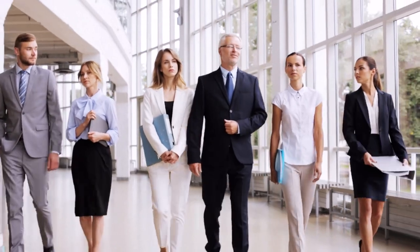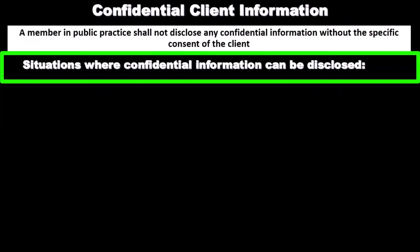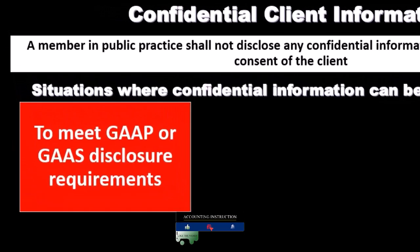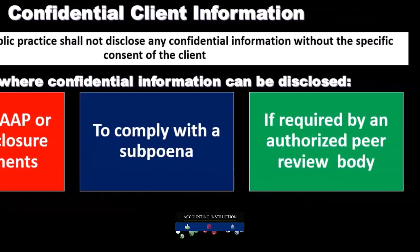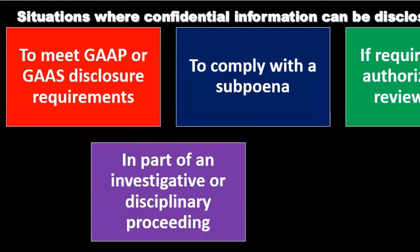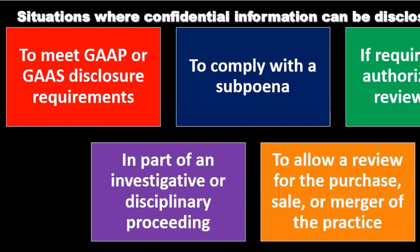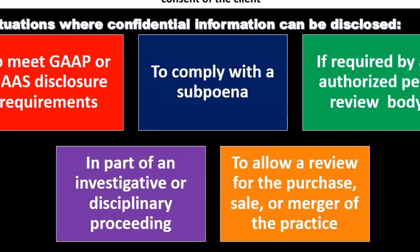However, there are some exceptions to the rule — situations where confidential information can be disclosed. In other words, to meet GAAP or GAAS disclosure requirements; to comply with a subpoena, if there's a legitimate subpoena; if required by an authorized peer review body, because that's within the profession; as part of an investigative or disciplinary proceeding, similar to a subpoena-type situation; or to allow a review for the purchase, sale, or merger of the practice.